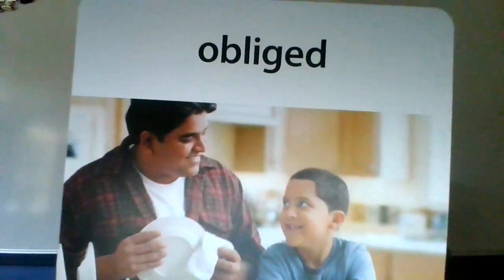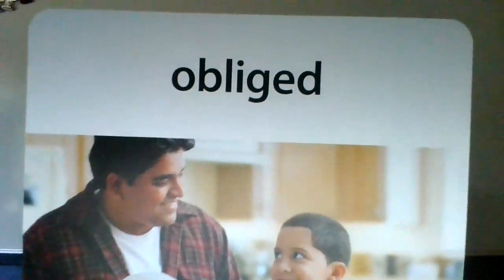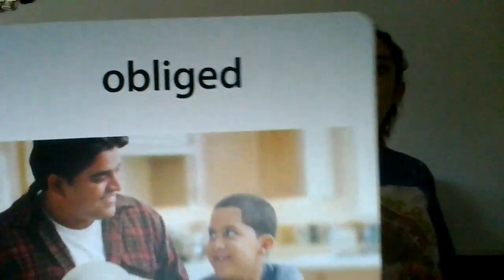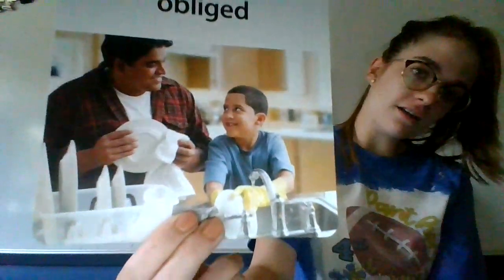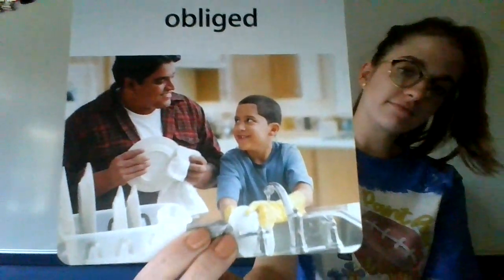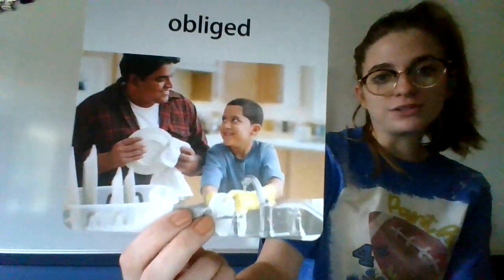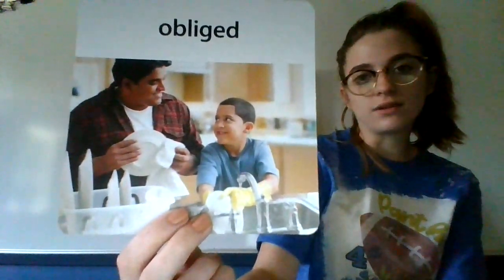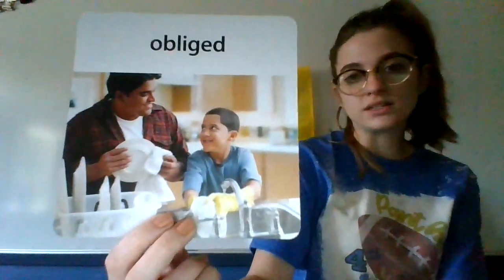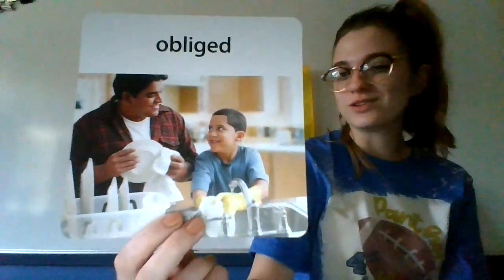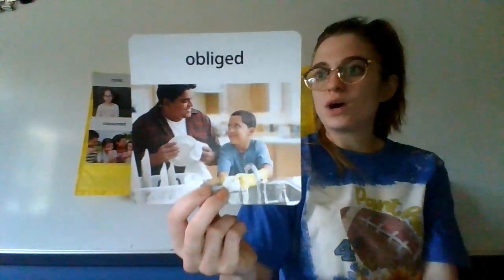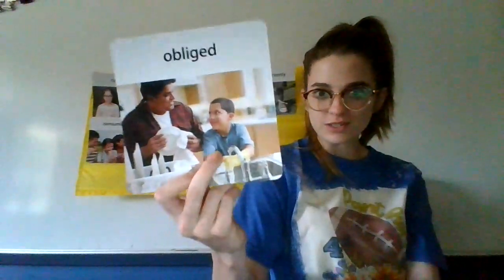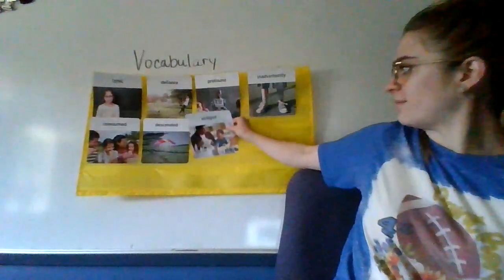Word number three: obliged. Look at him — he's being so helpful, helping daddy-o do the dishes. If you obliged, you did what you were asked or expected to do. So dad must have asked his son, 'Hey kiddo, come help me with the dishes,' and the kiddo obliged. I like to sing while I do the dishes because otherwise it's boring — or listen to audio books and podcasts. Our sentence: When his father asked him to wash the dishes, Calvin obliged. He did what was asked of him.